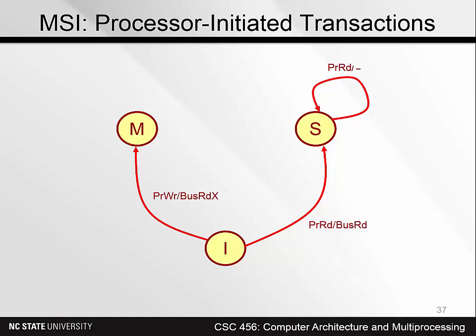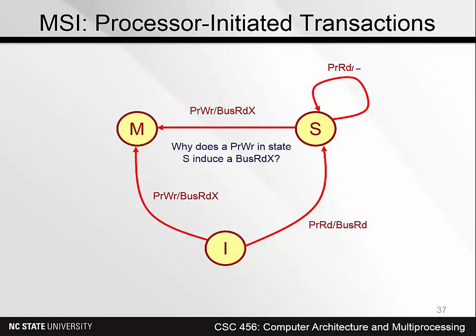If a processor reads a block not in its cache, that's a processor-read out of state I — it causes a bus read transaction to fetch a clean copy. It doesn't need to cause any other caches to change state. If a processor reads a block already in its cache, main memory does not need to be referenced, so there's no bus transaction. There's also a transition from state S to state M — when a processor writes to a line already in its cache, a bus action is needed because any other cache holding a copy must be invalidated. If a block is cached in state M, the processor can read or write it without any bus activity.